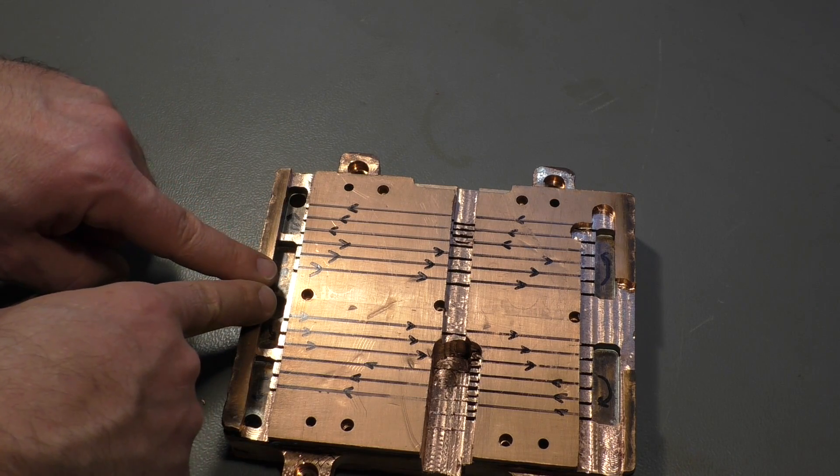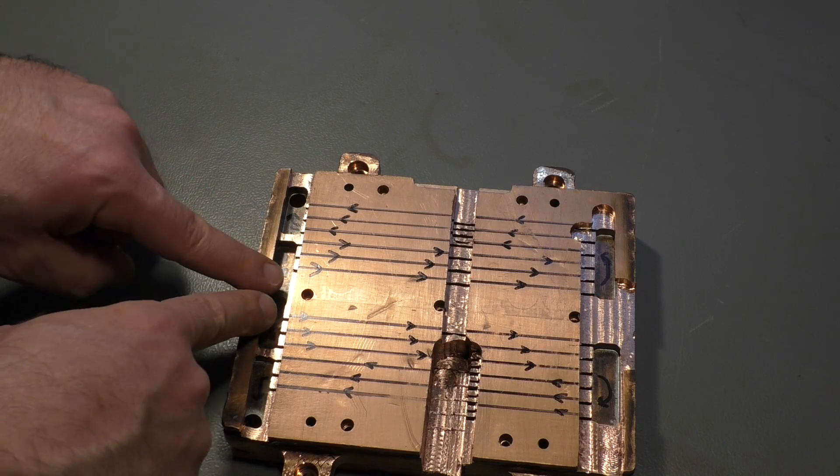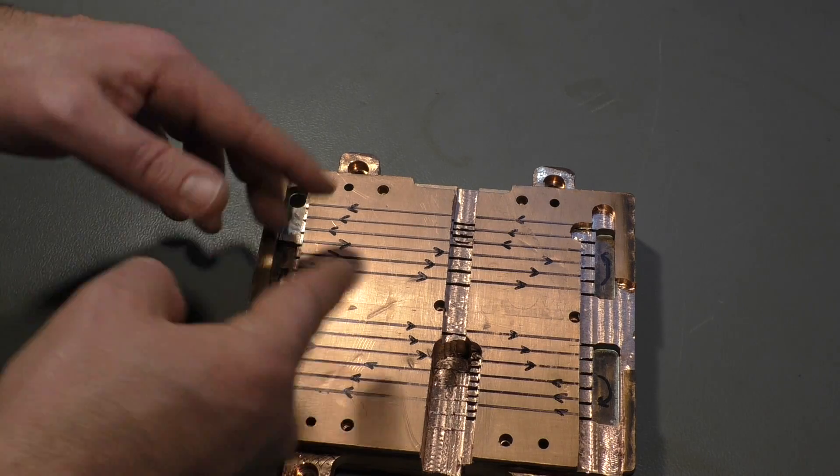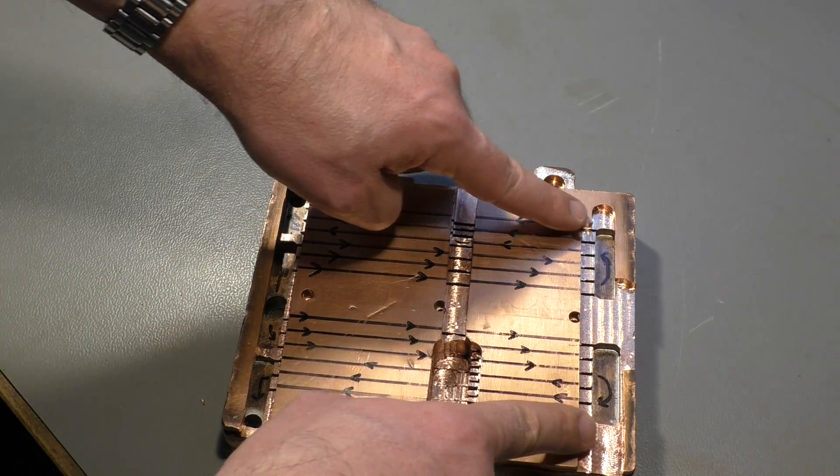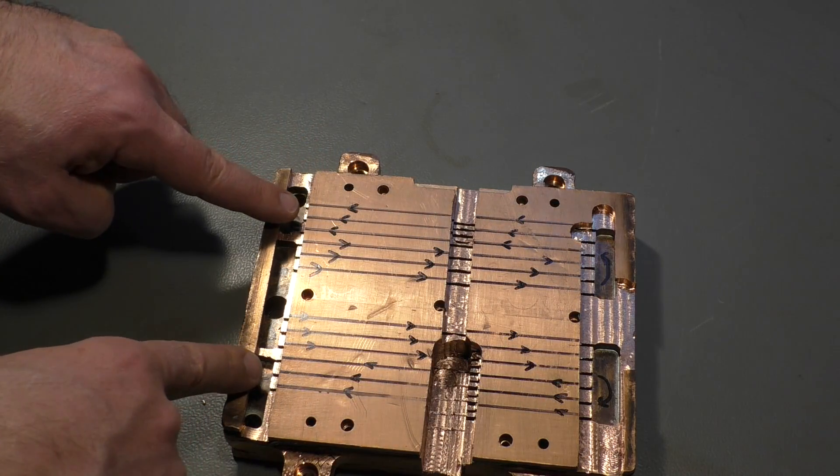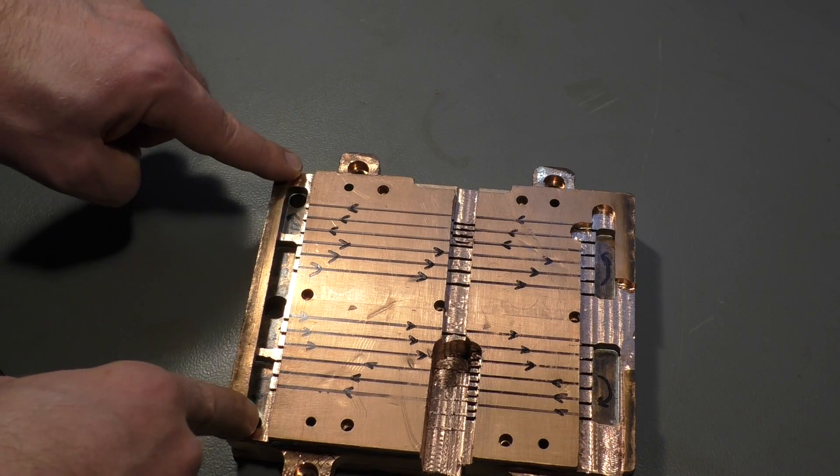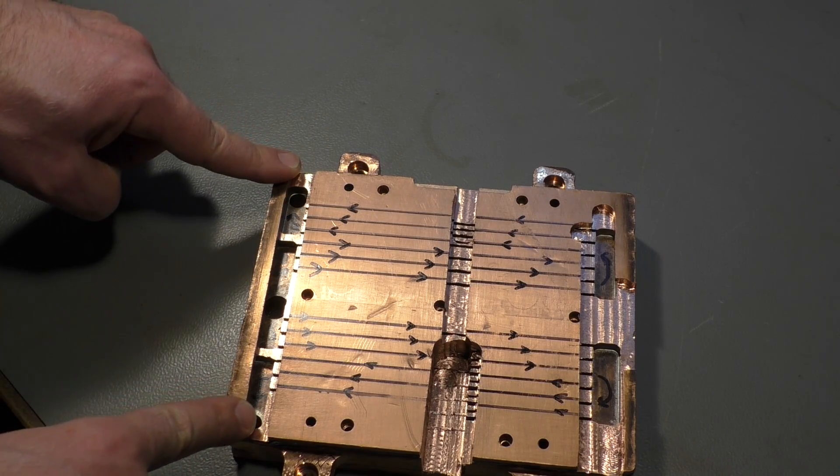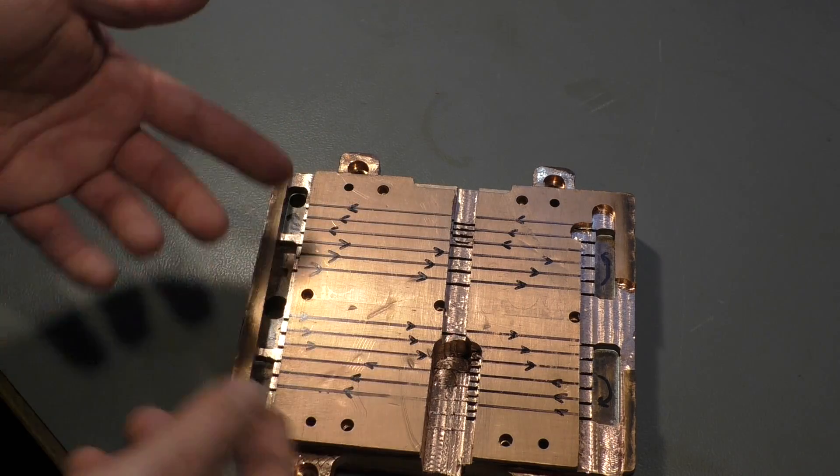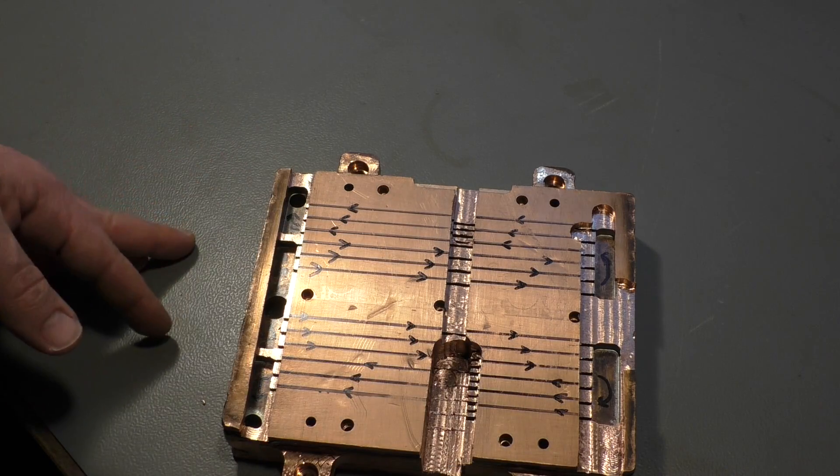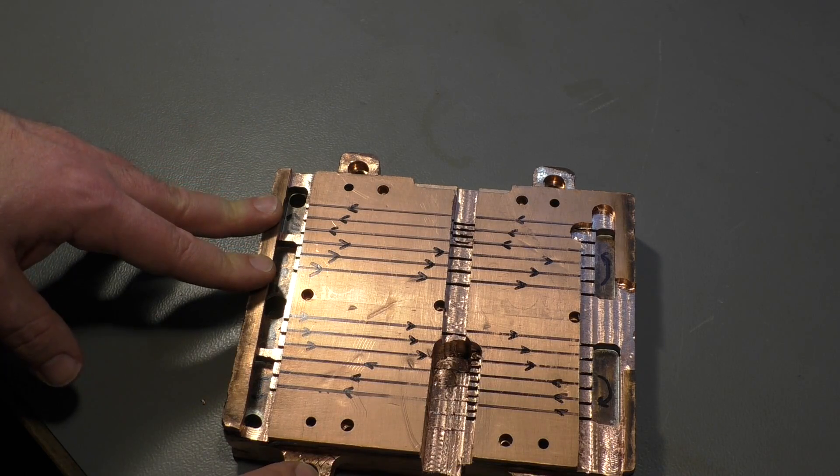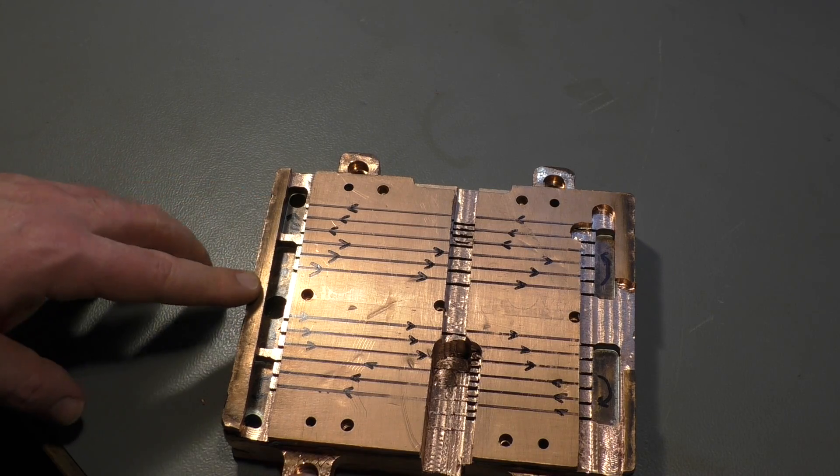So, the gas comes in, or the liquid comes in, turns into gas and cools everything. Goes that way, goes that way, goes back to these slots and out to the tubes here. Maybe it's the other way around. I don't know which one is input, which one is output. But in the end, it doesn't make a big difference.